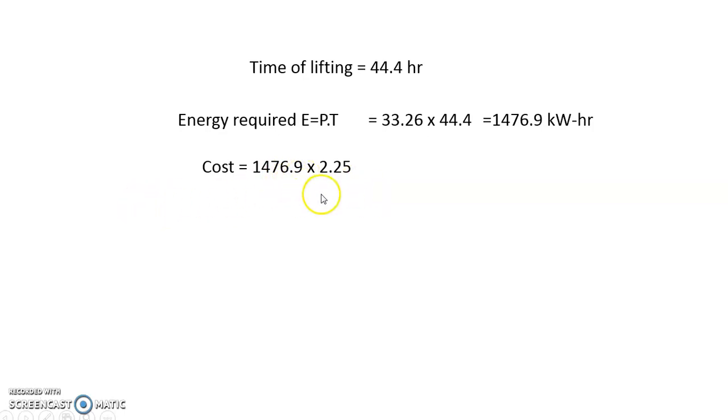So the total cost in account of energy, 1476.9 kilowatt hour, for one kilowatt hour it is 2.25 rupees, the total cost is 3,323 rupees.